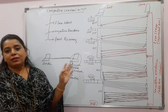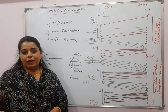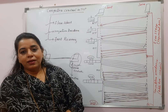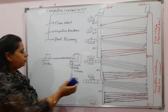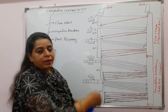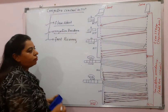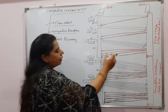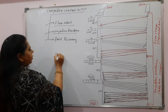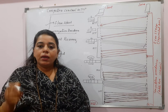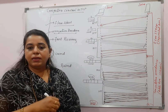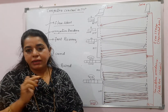Let us start with the congestion control policy. The first algorithm is called Slow Start — it also has another name: Exponential Rise. To understand these algorithms, I have given an illustration showing the slow start phase and the congestion avoidance phase. There is a client and a server. At the client side, I am writing CWND — the Congestion Window Size.